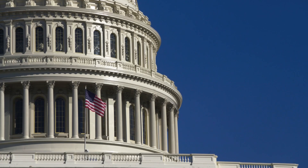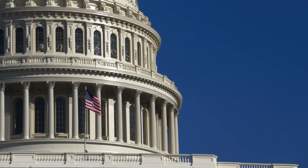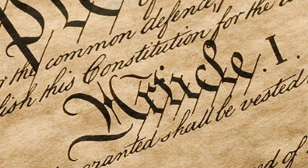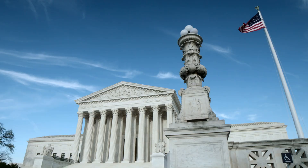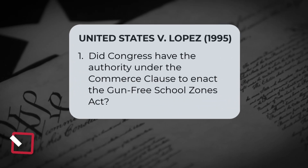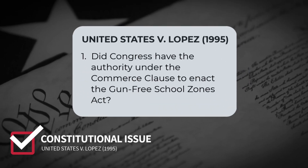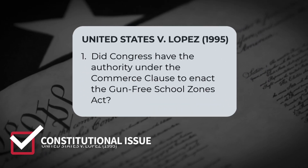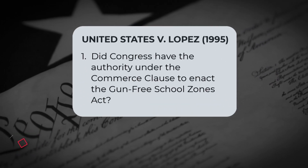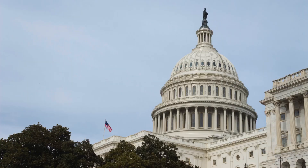The federal government, on the other hand, justified its actions by claiming that gun violence in schools has a significant impact on the national economy, thereby falling under Congress's power to regulate interstate commerce. The case quickly escalated through the federal court system, leading to a showdown in the U.S. Supreme Court. The key constitutional question in the case was: did Congress have the authority under the Commerce Clause to enact the Gun-Free School Zones Act?